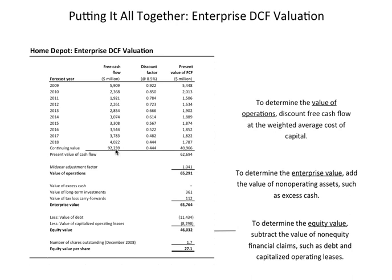Discounting all of those free cash flows at that WACC gives us the present value of the free cash flows. Starting in 2019, they defined that as the continuing value period, because forecasting year by year had started to get too hard. Using the key value driver formula, they put the assumptions in and created a value for the firm from 2019 forward in perpetuity, discounted that to present value, and added it to the first 10 years. That became the overall operating value of the firm — the value of Home Depot stores at the time was $62.694 billion.